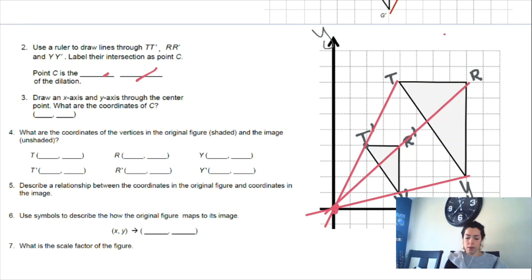Draw an X axis and Y axis. They are already given, so we don't have to do that section. What are the coordinates of the vertices in the original figure and in the image that is unshaded? For T, T is 0, 4, 1, 2, 3, 4, 5, 6, 7, 8. So T is 0, 8. R is going to be 0, 5, 6, 7, 8, so 0, 8.